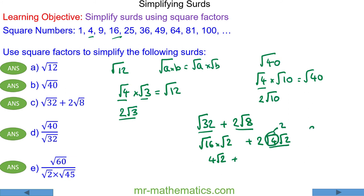So we have 4√2, and the √4 makes 2, giving 2 times 2 times √2. In total we have 8√2.